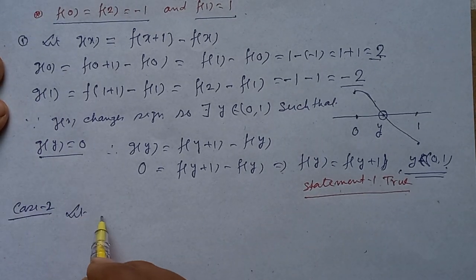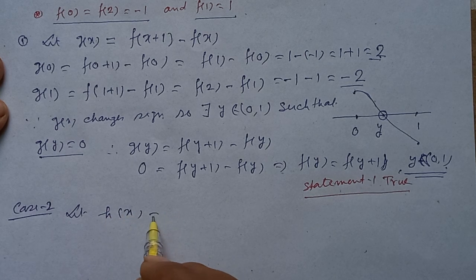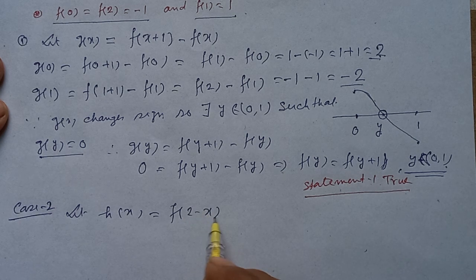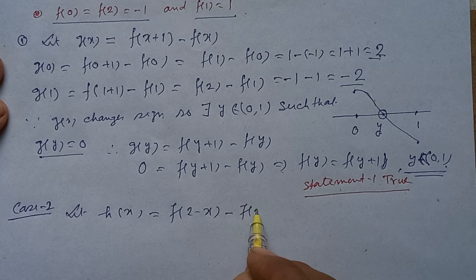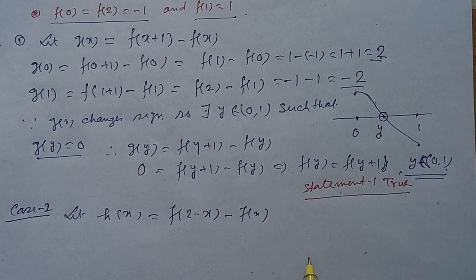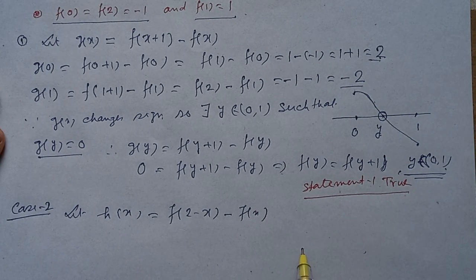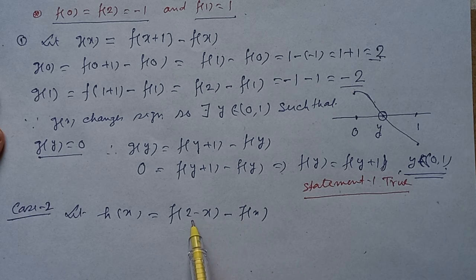Now for statement 2, let h(x) = f(2-x) - f(x). We want to check whether f(y) = f(2-y) for every y in [0,1].